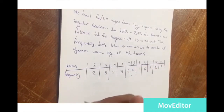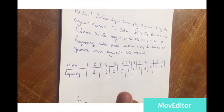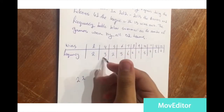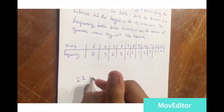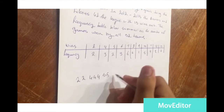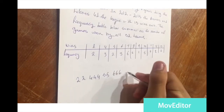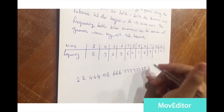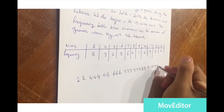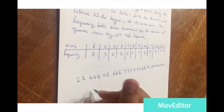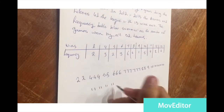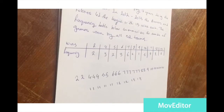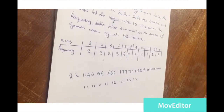First, we write the numbers out in order from the frequency table. We have two ones, then four with a frequency of three so we write four, four, four, then five, five, six, six, six, seven, seven, seven, seven, seven, seven, eight, eight, nine with frequency five, ten with frequency four, eleven, twelve, twelve, ten, and thirteen.